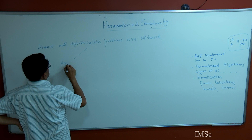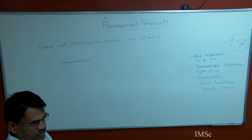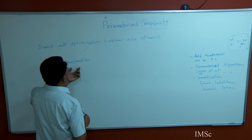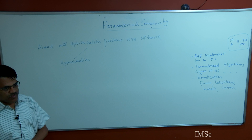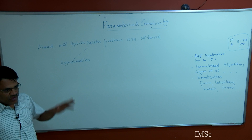A fairly successful approach is approximation algorithms, where you look at optimization problems, relax the requirement that you really want the optimum solution, but settle for something close to the optimum, while solving it in polynomial time. The challenge is to figure out how close to the optimum your algorithm produces, given the fact that you do not know the optimum. The big goal is to get close to the optimum in polynomial time.